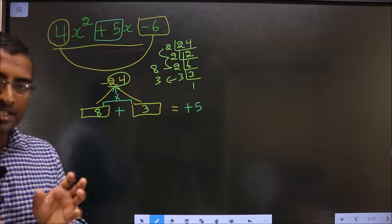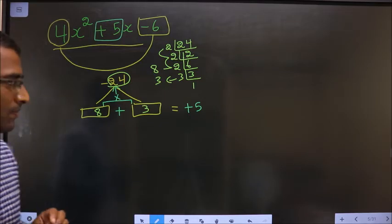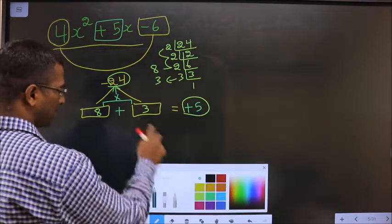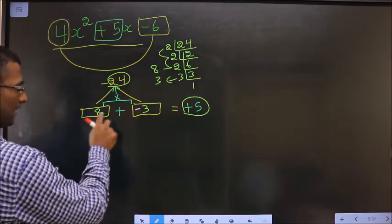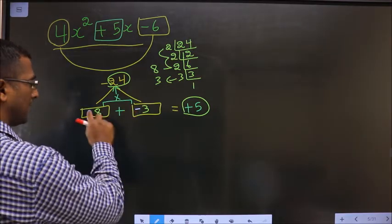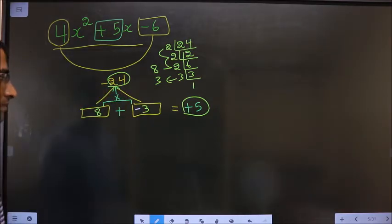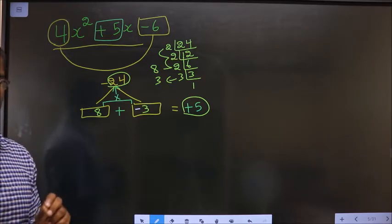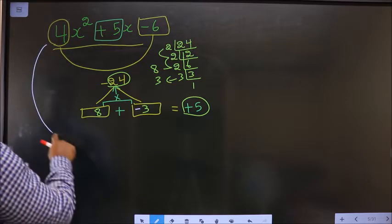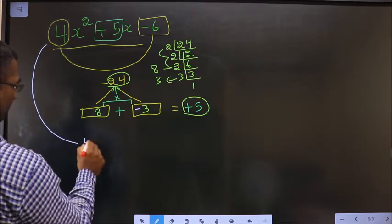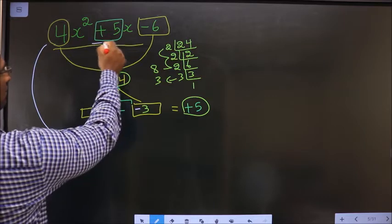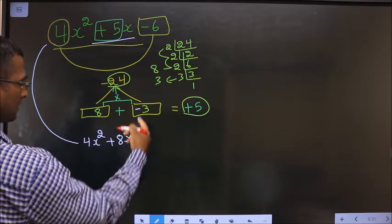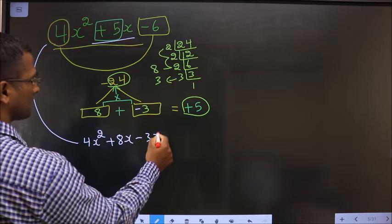Now adjust the signs. I should get here plus 5, and that could only happen if I place negative before 3. 8 minus 3 is plus 5, and 8 into minus 3 is minus 24. Now the signs are also adjusted. In place of 5x, I will be writing plus 8x minus 3x minus 6.